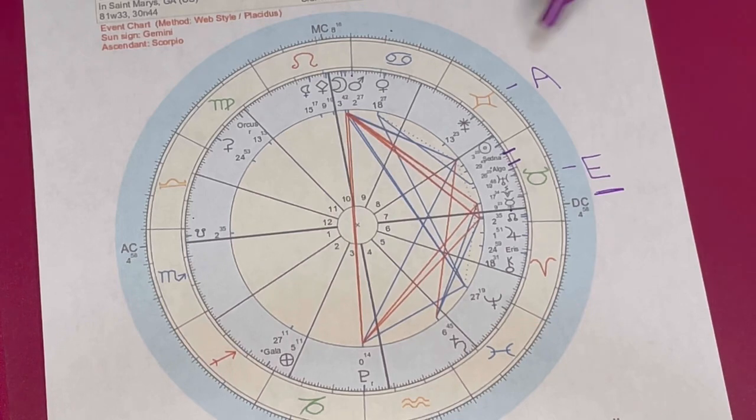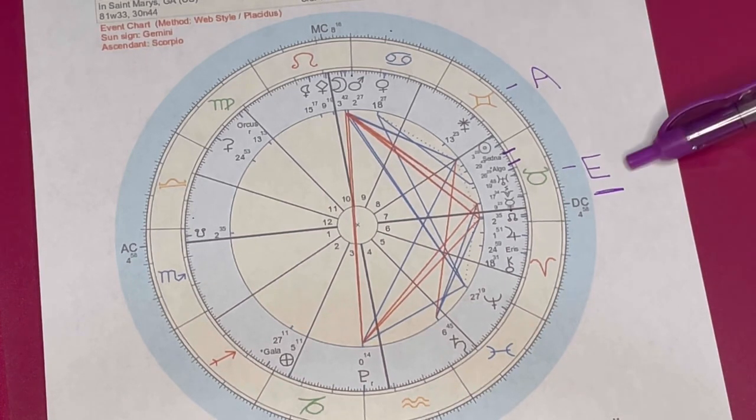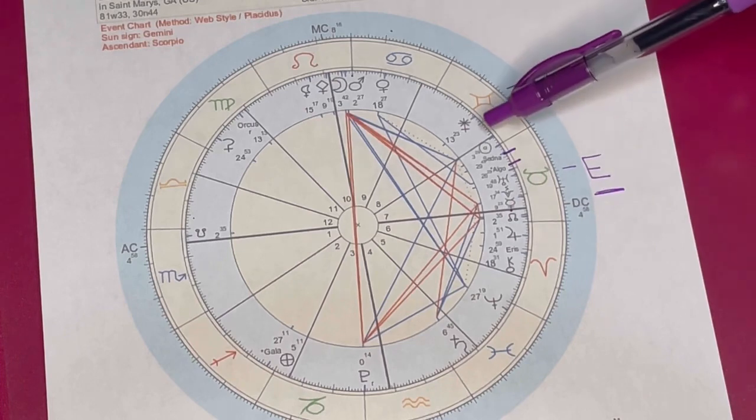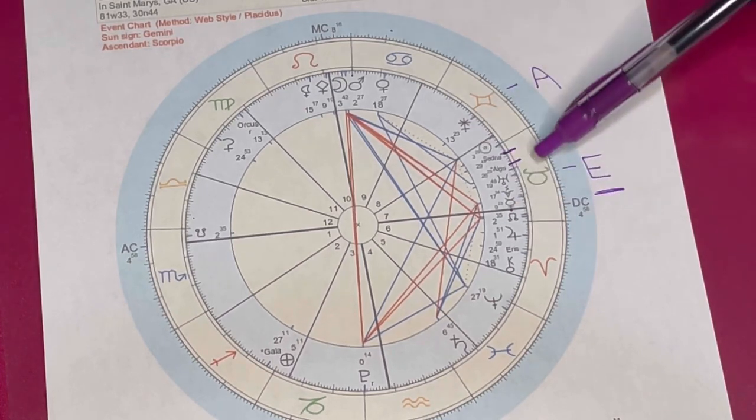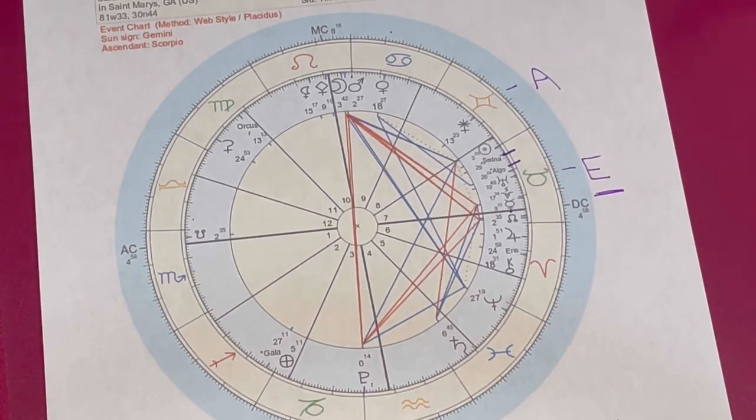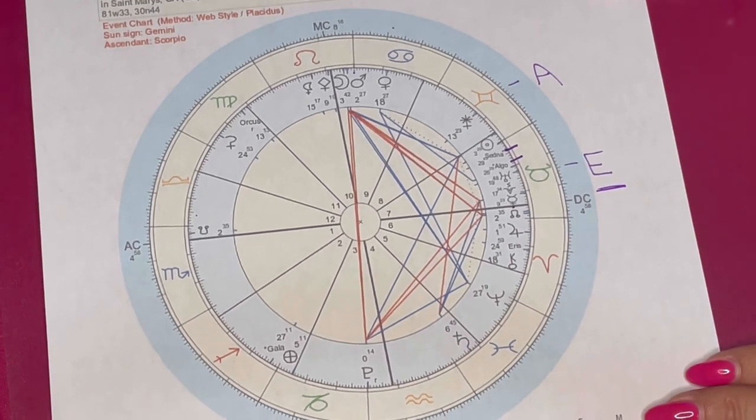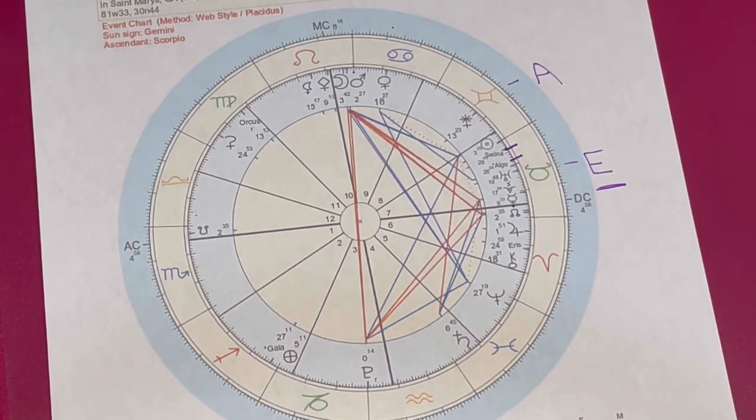So we see this nice lineup here. And when the sun did go through, when he entered into Gemini's realm, which is air, this is earth, this is the material. This is the physicalness of it. And then we go up to air, which is a higher, which is lighter.